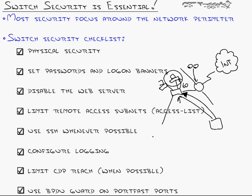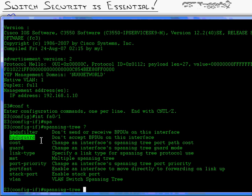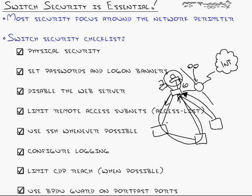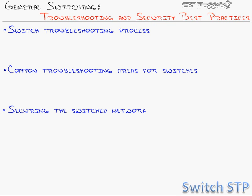BPDU Guard also helps prevent scenarios where somebody plugs in a hub under their cubicle and daisy-chains to another port in another cubicle which links back to the switch — the switch will send out a BPDU, it goes through the hub and comes back into itself. BPDU Guard detects that and shuts down both interfaces because it detects the loop in process. Don't confuse that with BPDU Filter, which is dangerous. BPDU Filter says don't send or receive BPDUs on this interface — it will ignore BPDUs coming in and doesn't shut the port down, so a loop could go undetected and cause one of those hospital-level network outages.